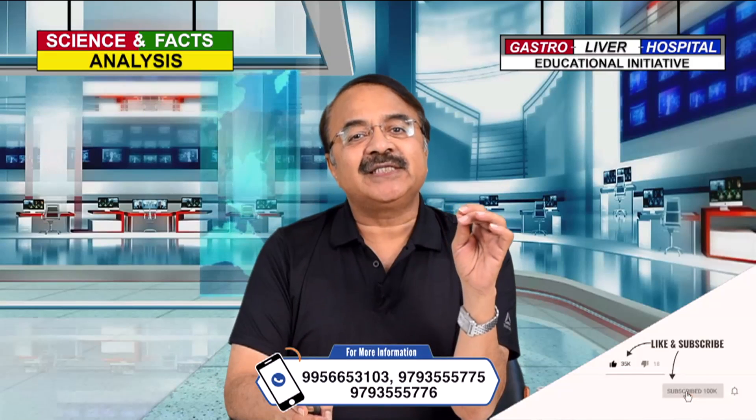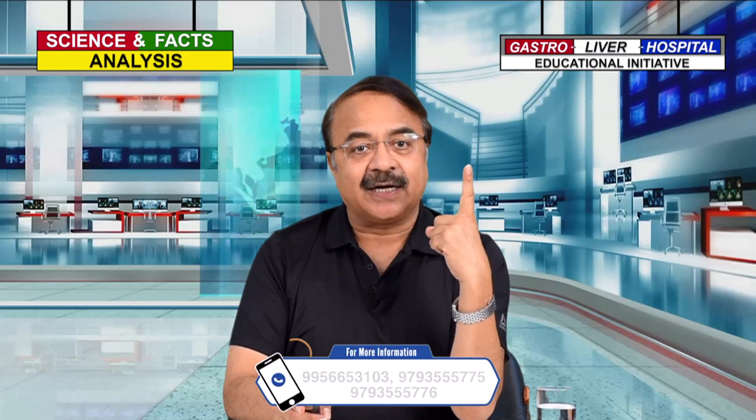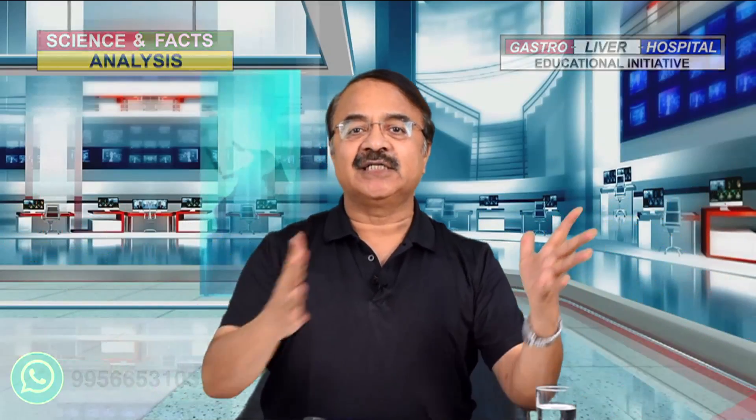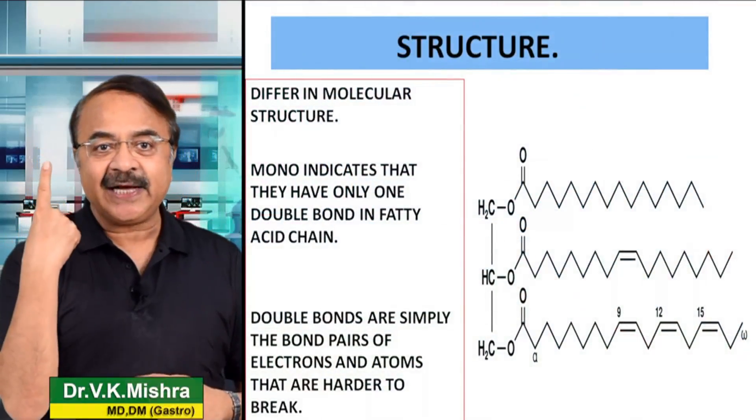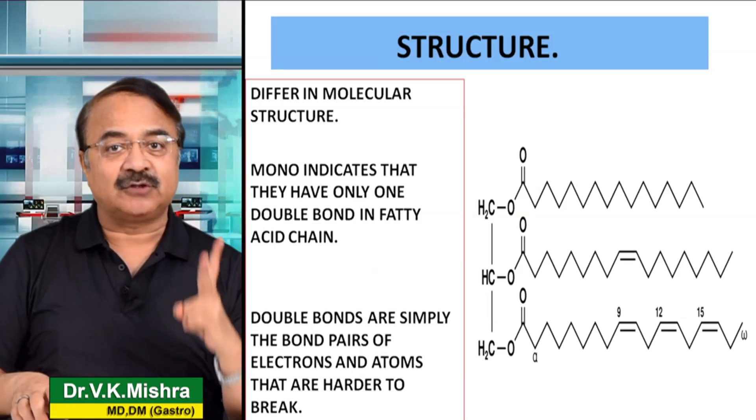Now, look at the structure. हम कैसे actually differentiate करते हैं कि ये है क्या problem? ये basically जितने भी fats हैं जो मैं बात कर रहा हूँ, ये differ करते हैं molecular structure में. Mono actually indicates — mono का मतलब है 1 — mono indicates that they have only one double bond in the fatty acid chain. जो fatty acids होते हैं, उसकी chain होती है, जिसके combination से fat बनता है. अगर उसमें एक single double bond है, इसका मतलब है कि ये mono unsaturated fat है.